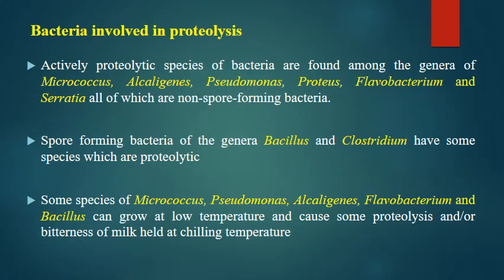Actively proteolytic bacteria are found among the genera Micrococcus, Alcaligenes, Pseudomonas, Proteus, Flavobacterium, and Serratia — all non-spore-forming bacteria. Spore-forming bacteria of genera Bacillus and Clostridium also have some proteolytic species. Some species of Micrococcus, Pseudomonas, Alcaligenes, Flavobacterium, and Bacillus can grow at low temperature and cause proteolysis and bitterness of milk when stored at chilling temperature — these are psychrotrophs that grow slowly and cause proteolysis and flavor changes.